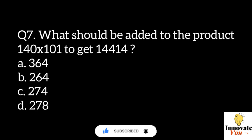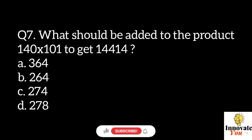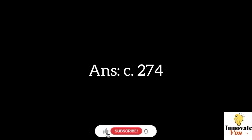Question 7. What should be added to the product 140 x 101 to get 14414? A. 364. B. 264. C. 274. D. 278. Answer C: 274.